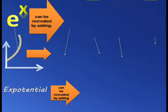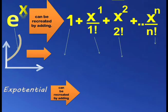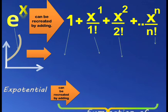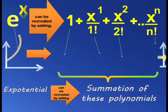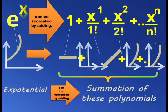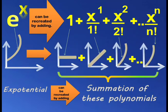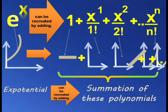This graph of e raised to x can be recreated using a summation of polynomials. The first term in this polynomial summation will be 1. After that it is x raised to 1 divided by 1 factorial, plus x raised to 2 divided by 2 factorial, and it goes on to x raised to n upon n factorial.